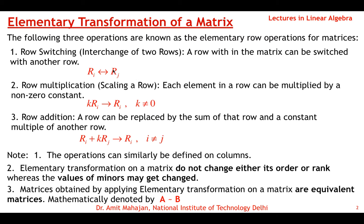By applying these elementary transformations we get equivalent matrices. If you are given a matrix A and apply these transformations, the new matrix obtained is called an equivalent matrix, denoted mathematically as A ~ B. This means B is obtained from A by applying a series of elementary transformations — these three operations — in any order and any number of times.